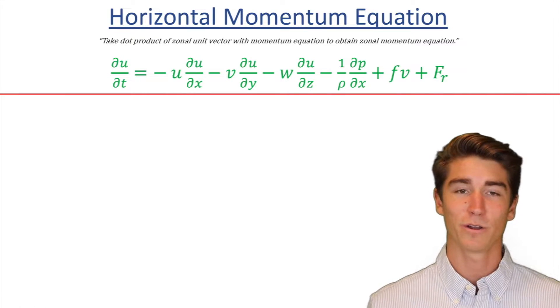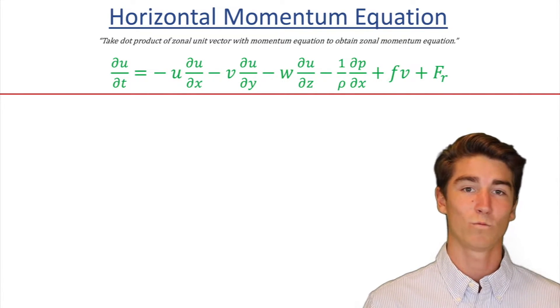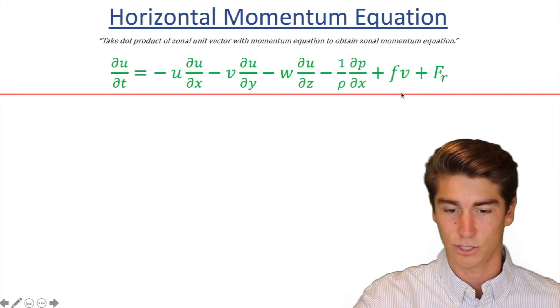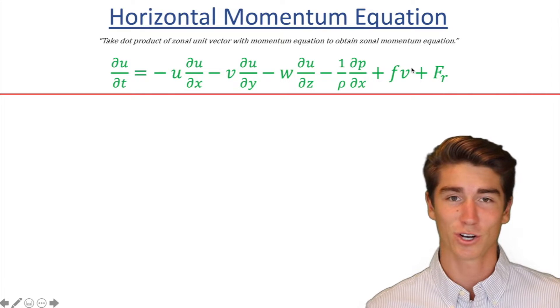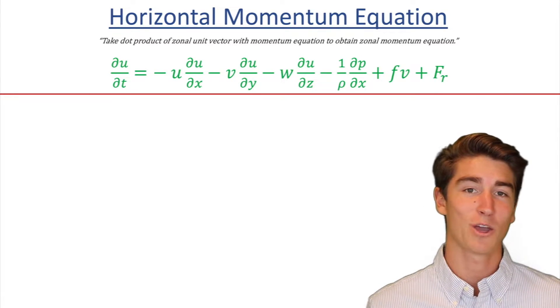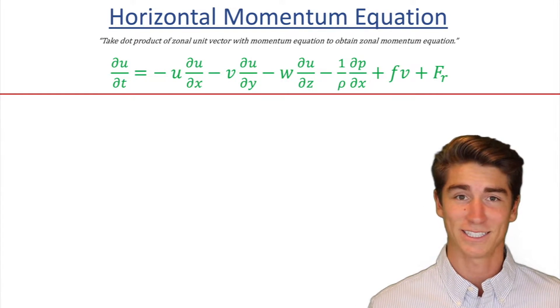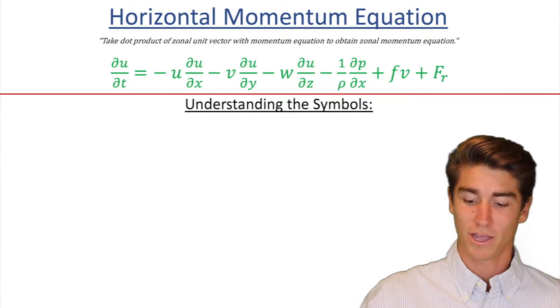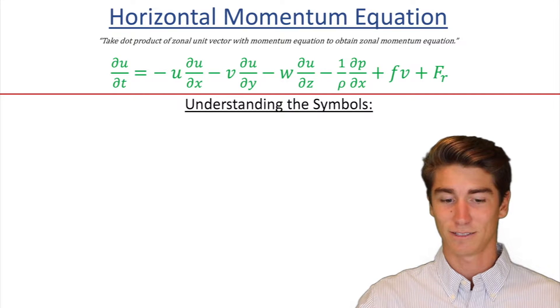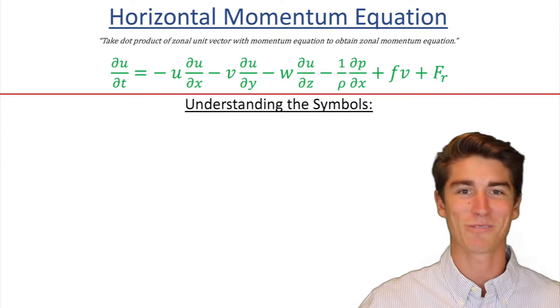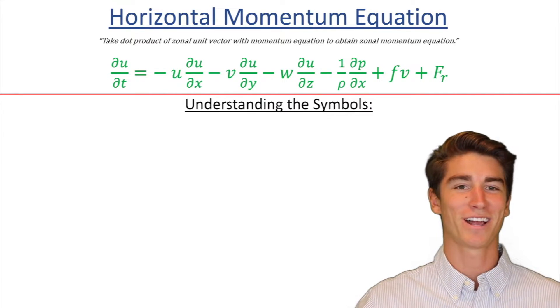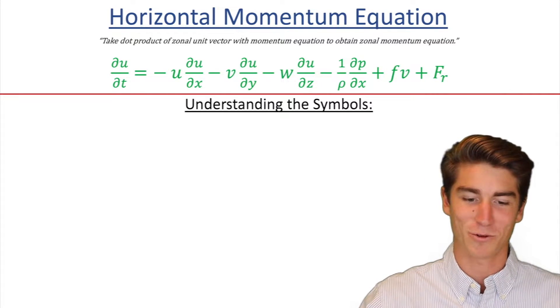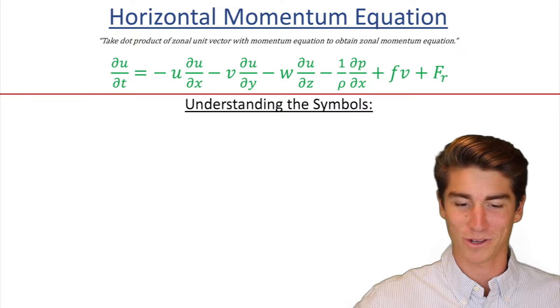And then from there, once we knew all the symbols, then we dove into the terms, looking at what this one means versus that. And then once you understand all the different terms, then you can understand the overall equation. So that's exactly what we're going to do. First we're going to look at the symbols, then the terms, then we're going to wrap it all together and understand the entire momentum equation.